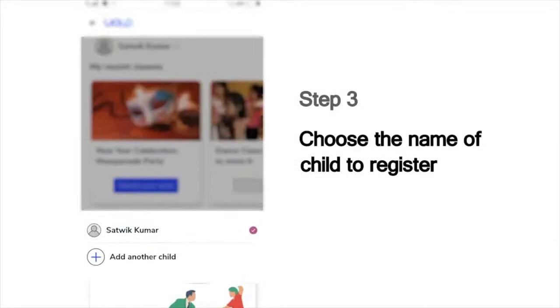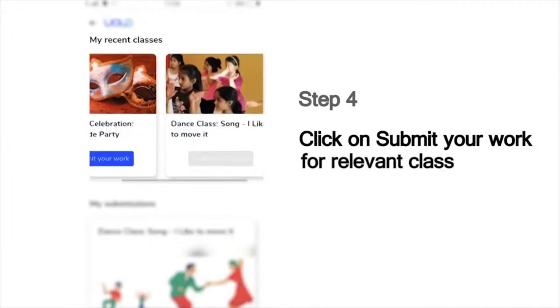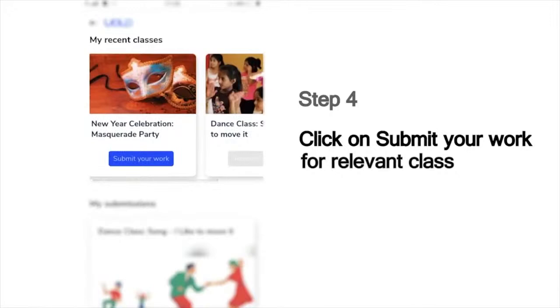Next, it will show you the list of children whose names are registered in this mobile number. Choose your name from this list to submit your work. For instance, if you are Sathvik Kumar, choose that name, and then choose the class for which you would like to make your submission. For example, if you have attended the New Year's Masquerade Party session and you would like to make the submission for this class, click on the submit your work button below that.